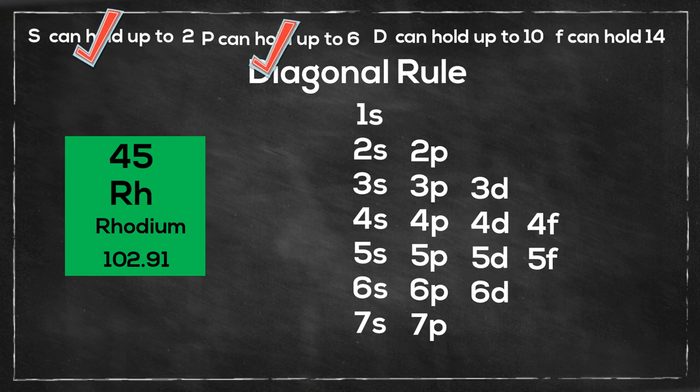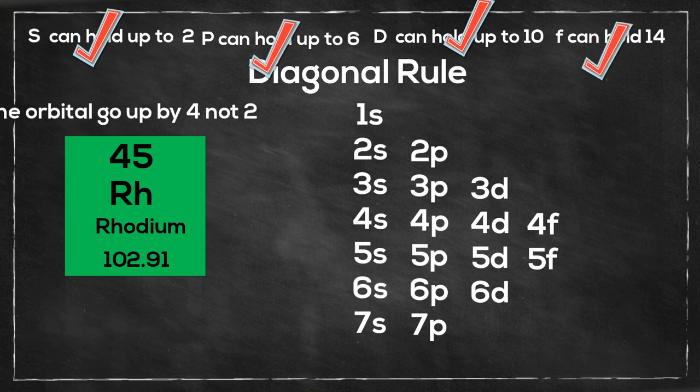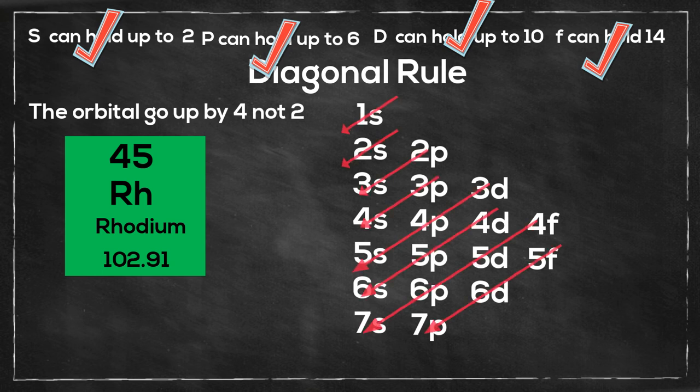The p orbitals can hold up to 6, the d orbitals can hold up to 10, and the f up to 14, and notice that they go up by 2. And then I'll draw in the arrows.